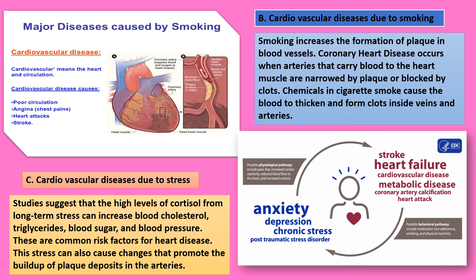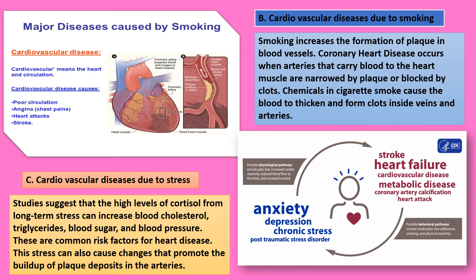Second, cardiovascular diseases due to smoking. Smoking increases the formation of plaque in blood vessels. Coronary heart disease occurs when arteries carrying blood to the heart muscle are narrowed by plaque or blocked by clots. Chemicals in cigarette smoke cause the blood to thicken and form clots inside veins and arteries. Cardiovascular disease caused by smoking leads to poor circulation, angina or chest pains, heart attacks, and stroke.